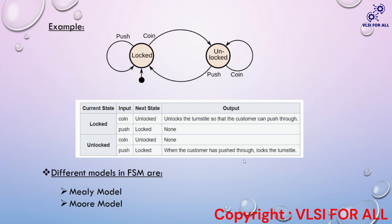Let's consider an example — a turnstile coin machine. It has two states: locked state and unlocked state. If the current state is locked and we give the input as a coin, then the next state will be unlocked, meaning the turnstile is unlocked so the customer can push through. If we give the push as input while in the locked state, the next state will also be the locked state, so there will be no output.